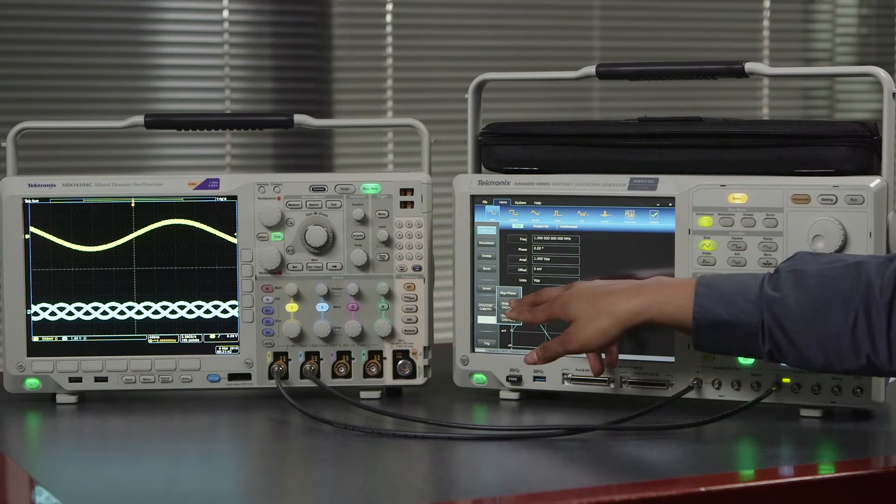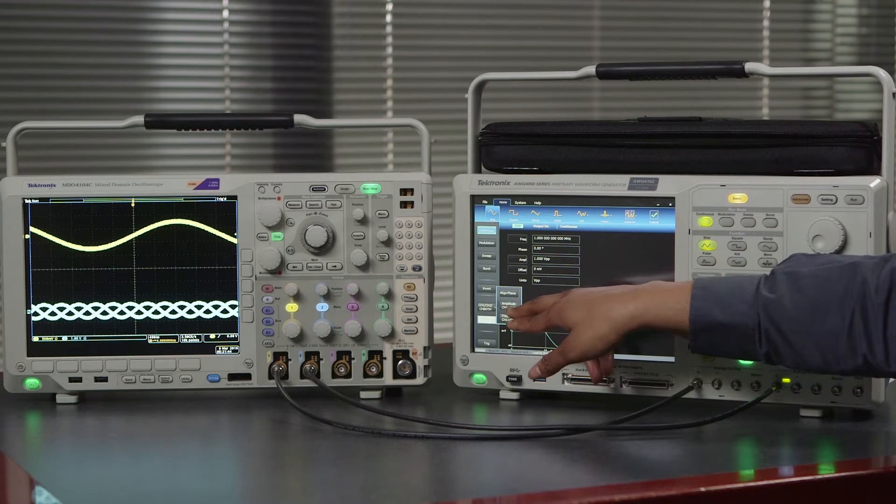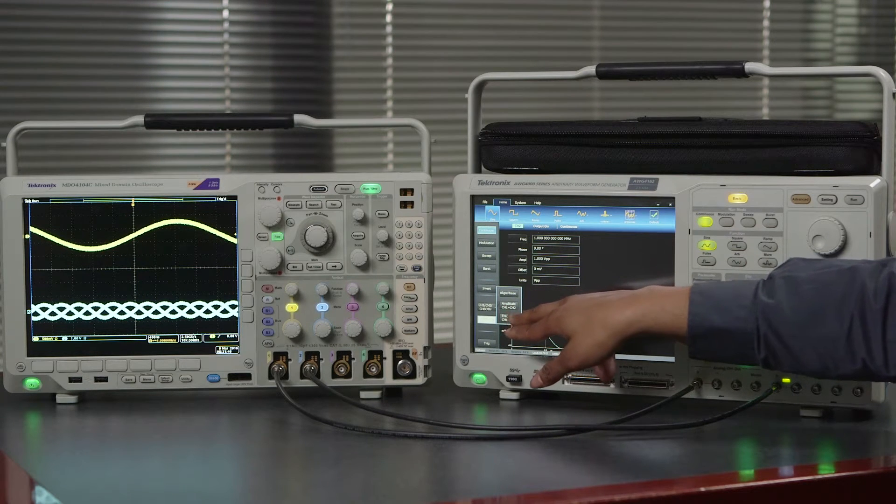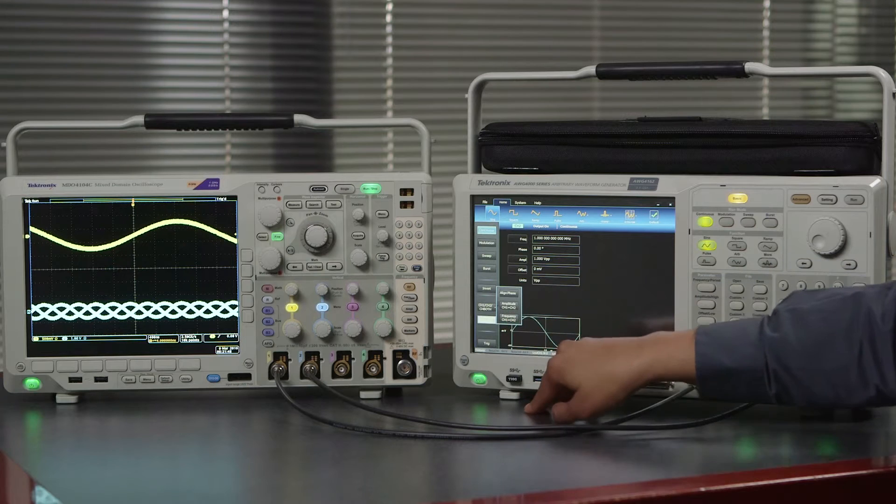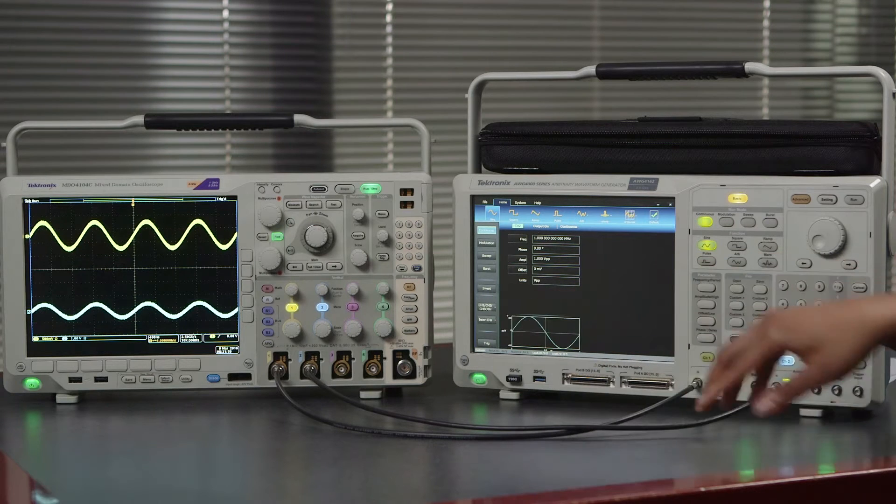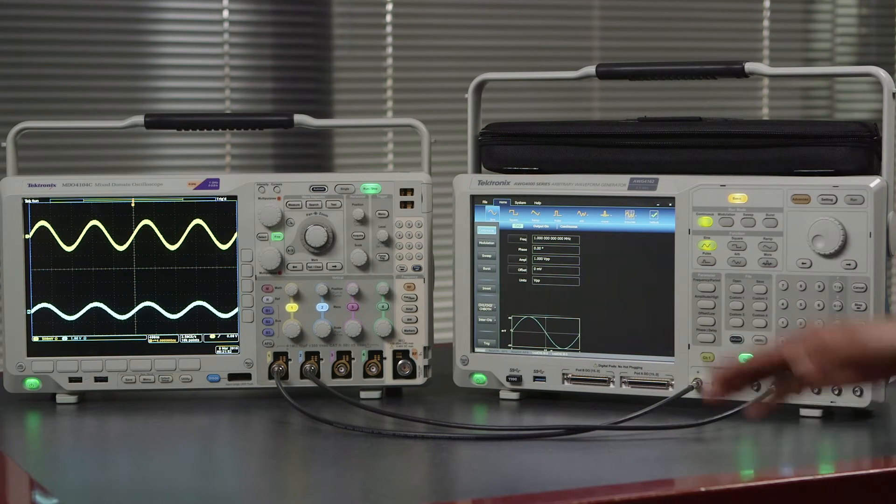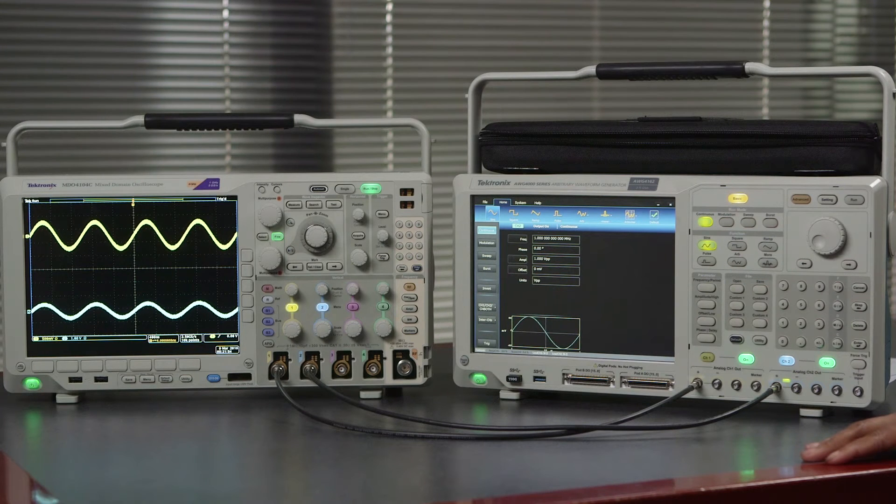You can see here you can also align the phases and make equal the amplitudes of your signals by using this button. As you can see on the output you have two in-phase and equal frequency signals.